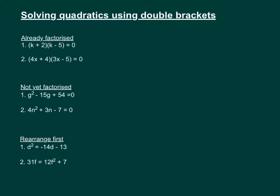One where the expression has already been factorised into double brackets, one where it hasn't yet been factorised, and one where we'd have to rearrange it first and then factorise the equation.